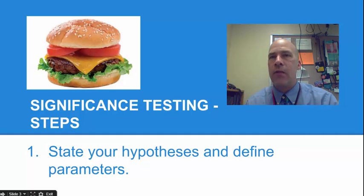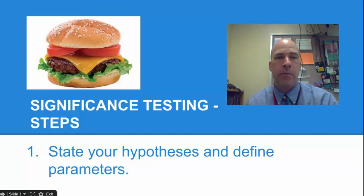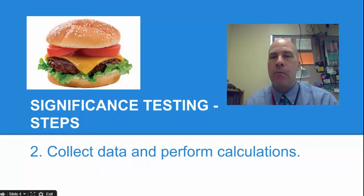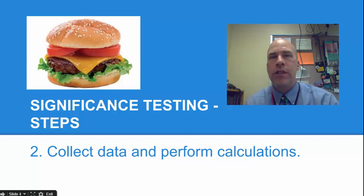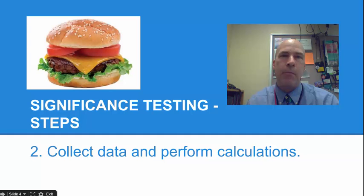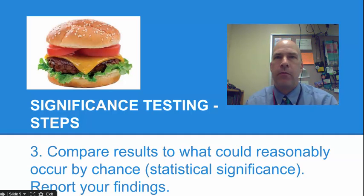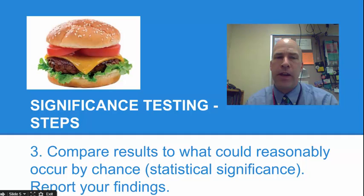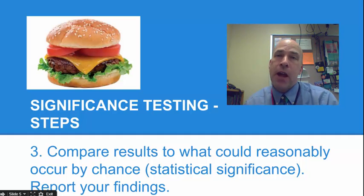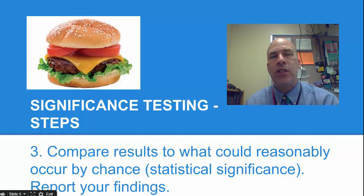First, we're going to state a hypothesis and define parameters. Here the hypothesis is that Wendy's cheeseburgers really do have four ounces of ground beef. Next, we're going to collect some data and perform calculations. I'll probably take a simple random sample, look at the data, and have some normality involved somehow. We'll take a look at how unusual my sample is using procedures from other chapters. And finally, we'll compare results to what could reasonably occur by chance — that's called statistical significance. We have to think about whether we were just unlucky with an unusual batch, or if it's really true that Wendy's cheeseburgers are less than four ounces.